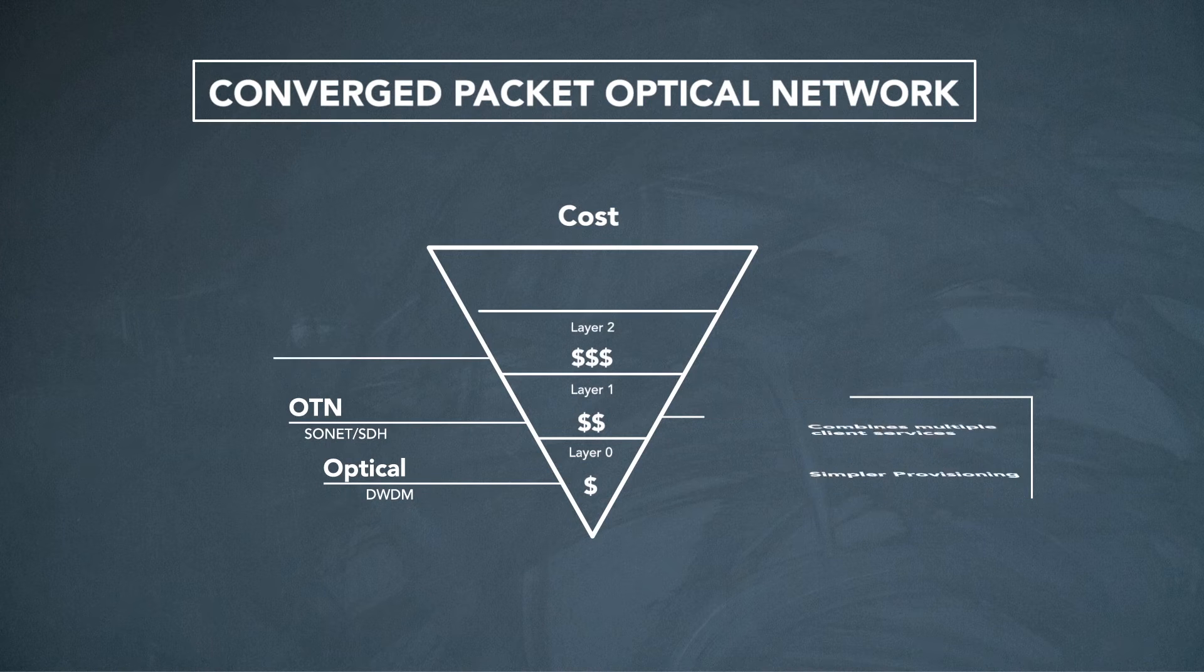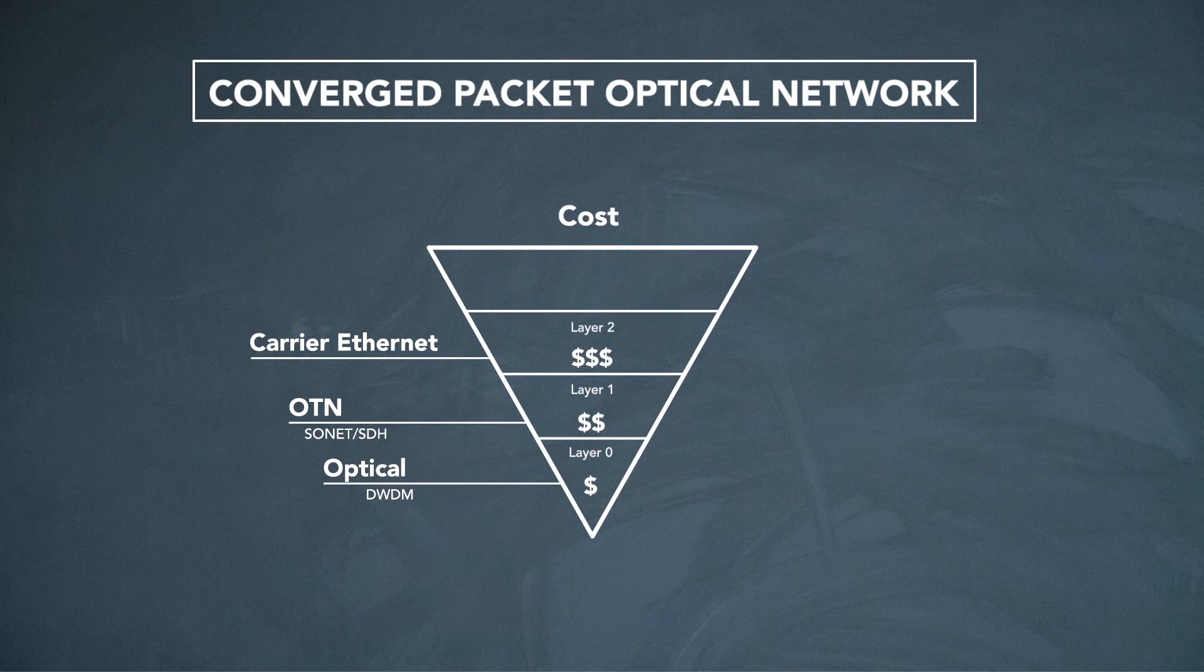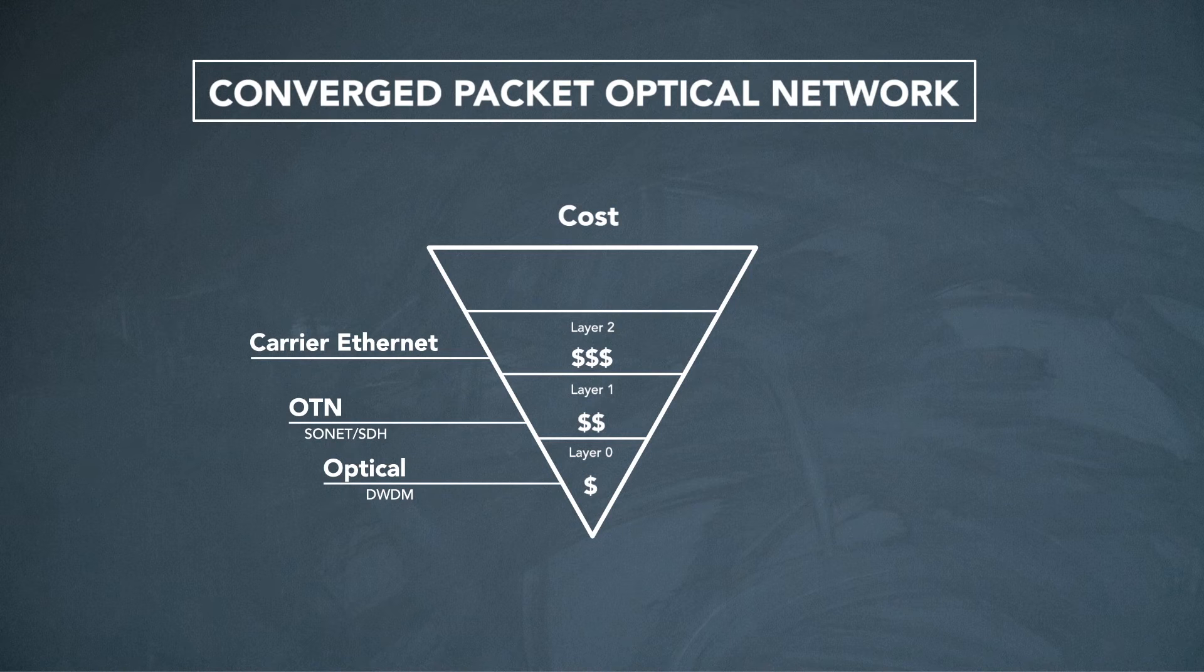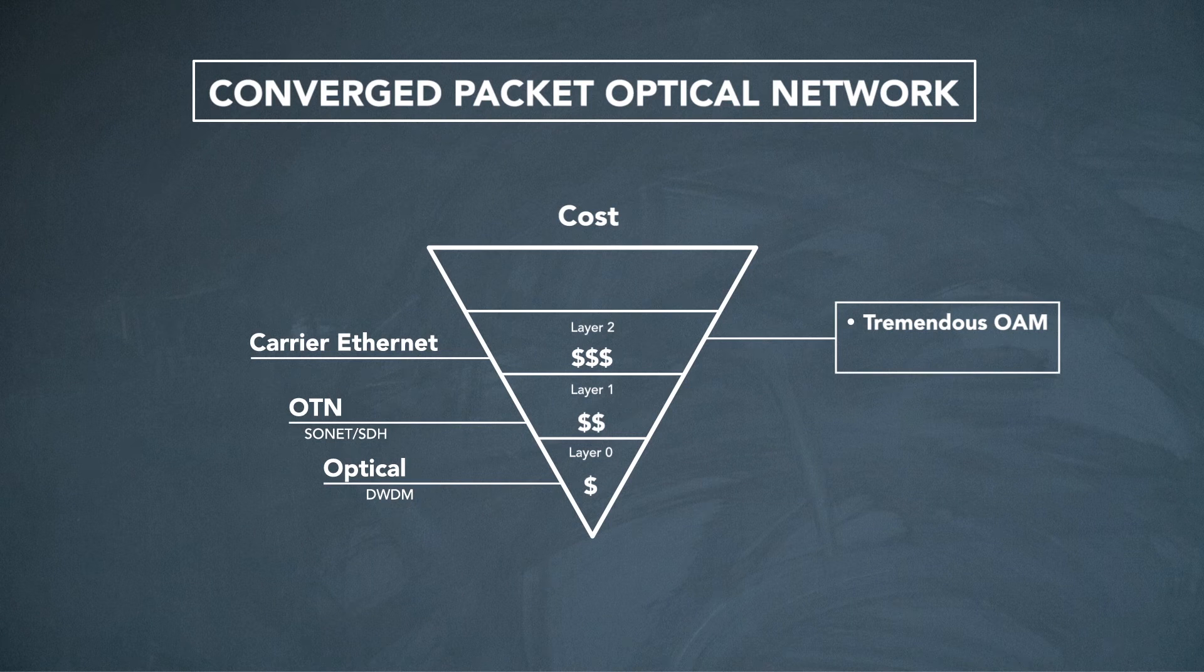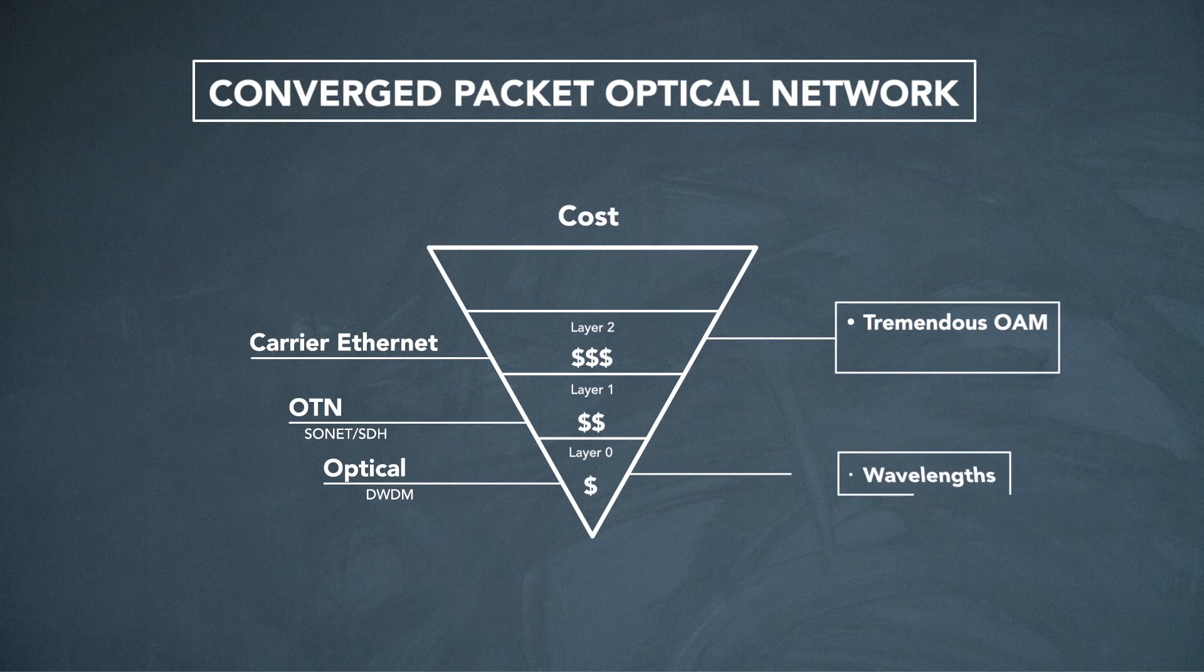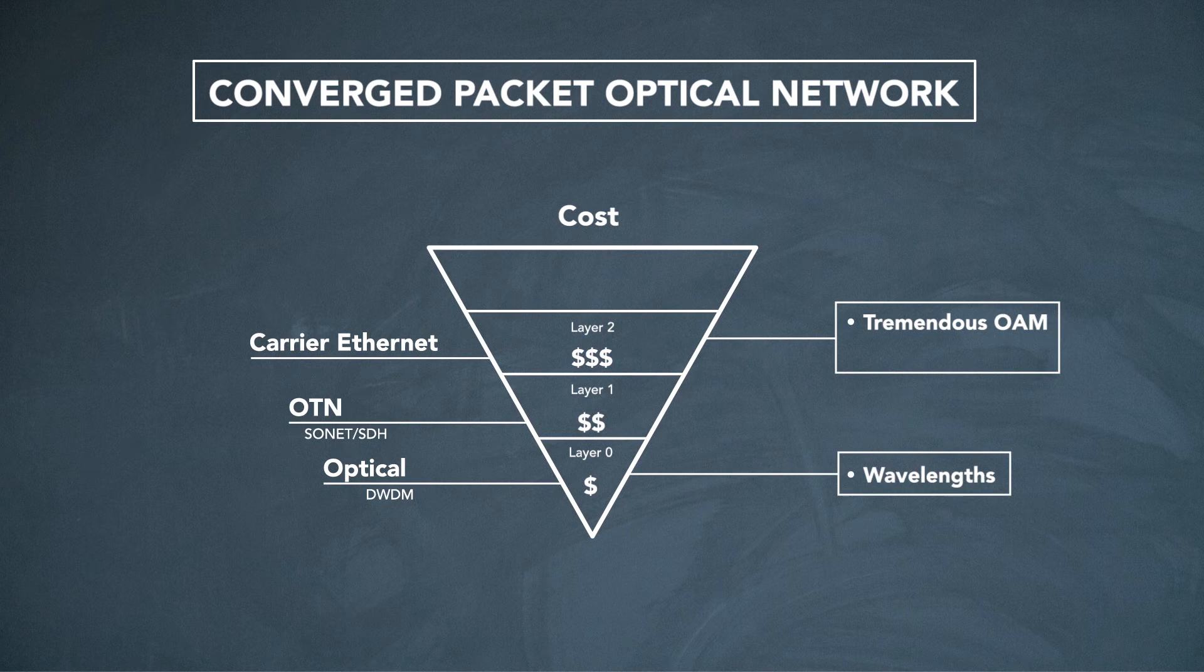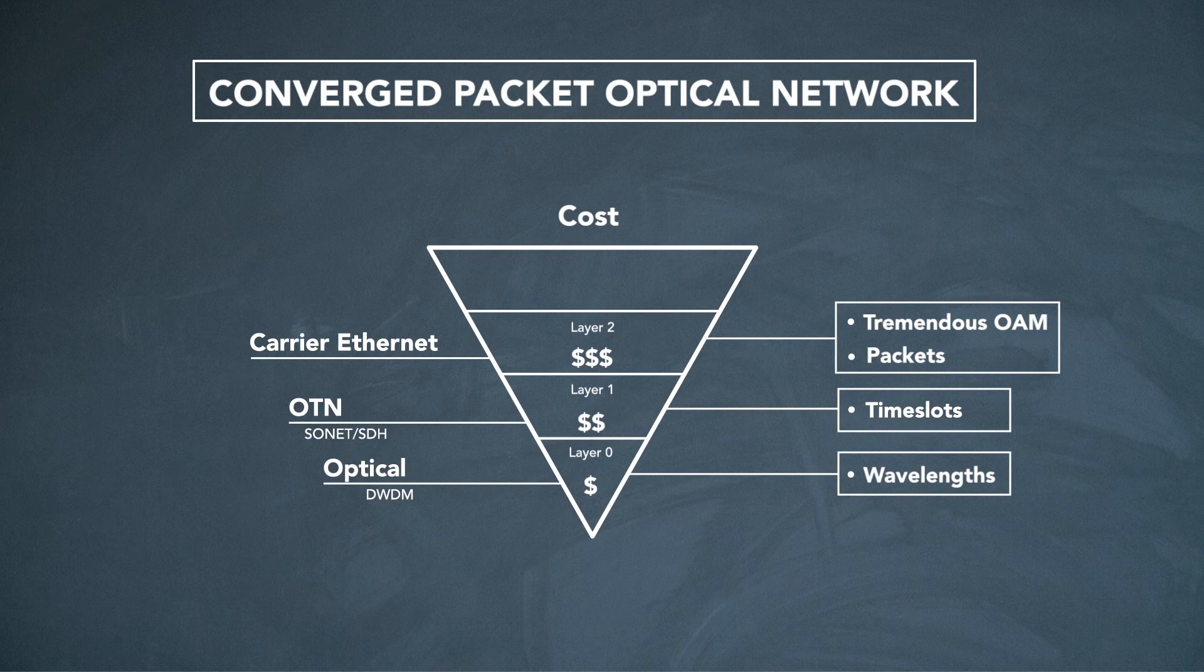And finally, at layer two, you have carrier ethernet. And this provides the switching and transport of packet services. But it does so in a way that provides tremendous operations, administration, and maintenance capabilities for the network. So with this combination, traffic can now be carried as wavelengths, as time slots, or as packets, whatever is the most cost effective network layer for the given application.